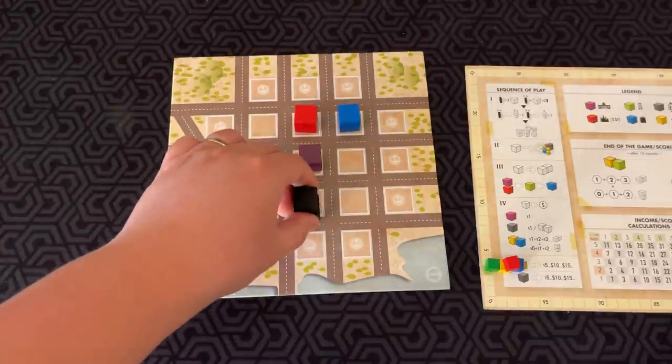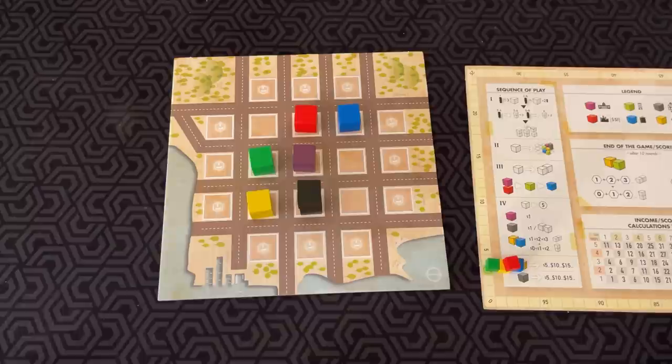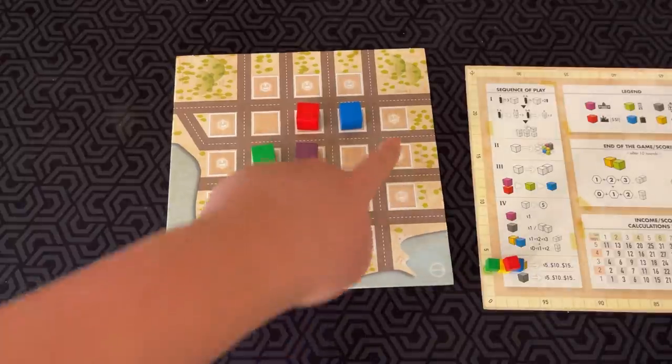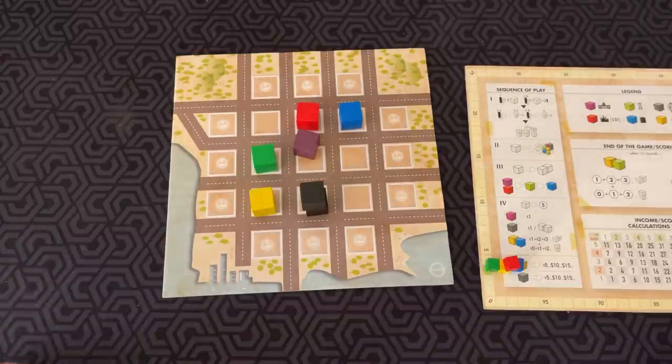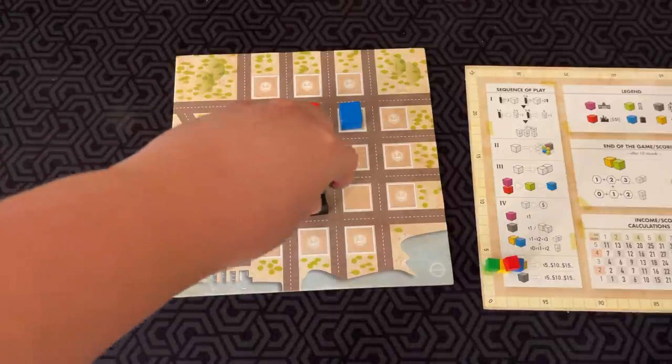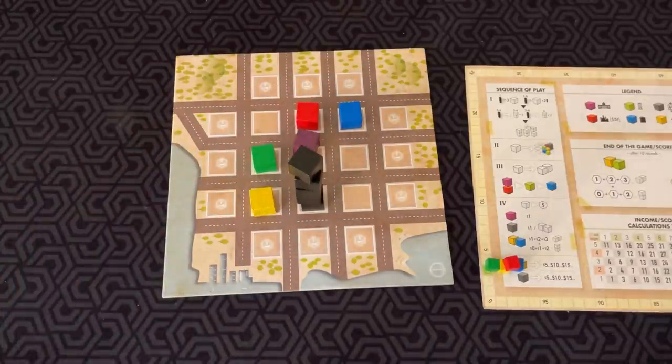Towers can only be built in the building sites of the center. You may never build towers in the suburbs on the outside. And a tower can only build up to five cubes max. Once everyone has built their cubes, then it's time for development.